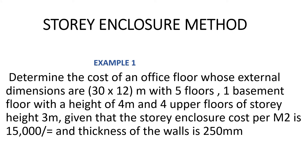Today we are going to look at an example on how to determine the cost of an office floor whose external dimensions are 30 by 12 meters, with five floors — one basement floor with a height of four meters and four upper floors of story height three meters — given that the story enclosure cost per square meter is 15,000 and the thickness of the wall is 250 millimeters.